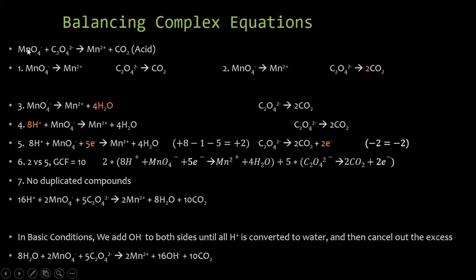Example: permanganate MnO₄⁻ plus oxalate C₂O₄²⁻ goes to Mn²⁺ and CO₂. This is a three minus on the left going to two plus — very complex. But we can split manganese from manganese, and carbon from carbon. Step one: break into the two half-reactions. It doesn't matter yet which is oxidation and which is reduction — we'll figure that out.